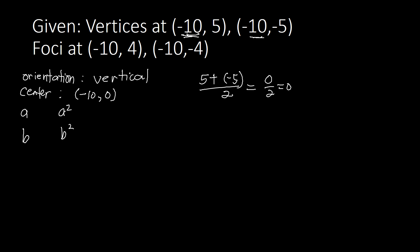Looking for A: A is the distance from the center to one vertex. The X values are the same, so we focus on Y. Center Y is 0, vertex Y is 5. Subtracting: 0 minus 5 equals negative 5. Dropping the negative, A equals 5, so A squared equals 25.